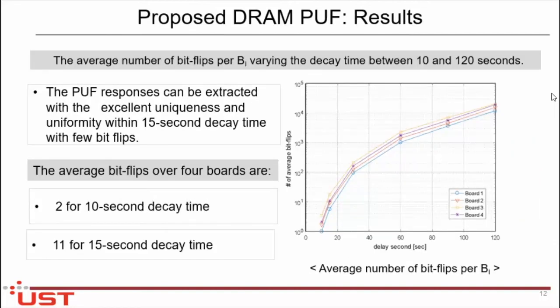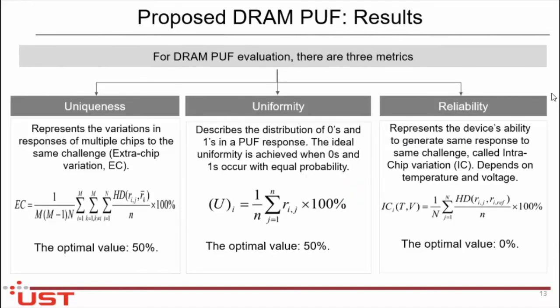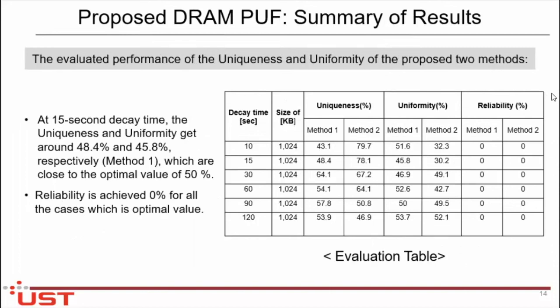These are the results of my work. We got an average of 2 bit flips at 10 seconds decay time and 11 bit flips at 15 seconds decay time. That is very good because our goal is to extract more bit flip positions at very short times. We evaluated three metrics: uniqueness, uniformity, and reliability. The optimal value for uniqueness is 50%, and for uniformity it is also 50%, and for the reliability test it is 0%. In the result summary, at decay time of 15 seconds, we got 48.4% for method one and 45.5% for uniformity — very close to the optimal values.